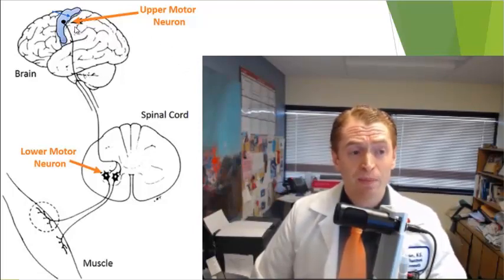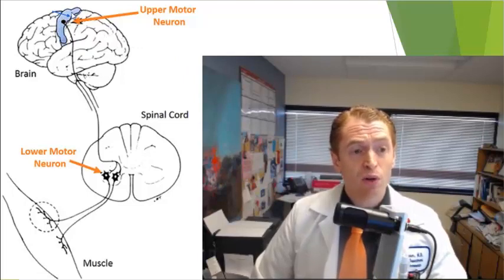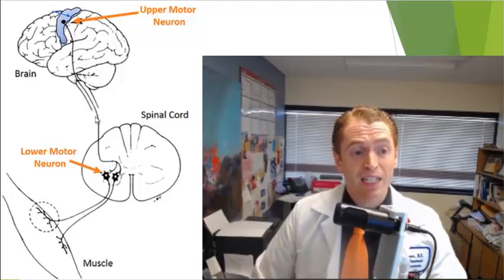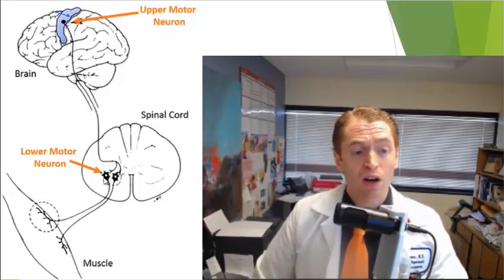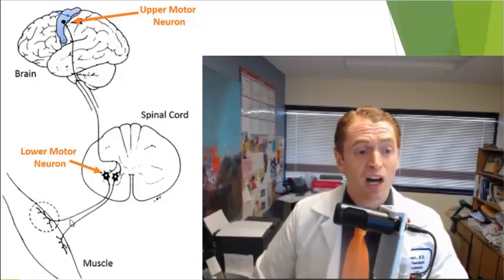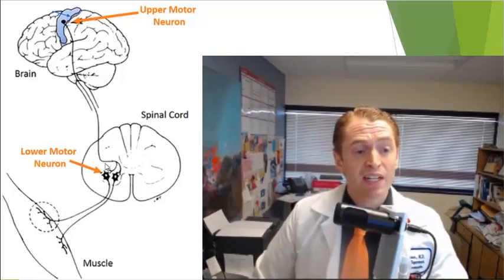Normally, with voluntary movement, neurons in the primary motor cortex — the upper motor neurons — send axons projecting through the brain, brainstem, and spinal cord, which excite the lower motor neurons, the spinal motor neurons, which in turn stimulate the muscles, causing them to contract. These are excitatory pathways.